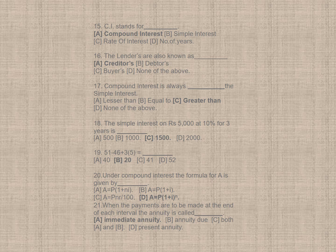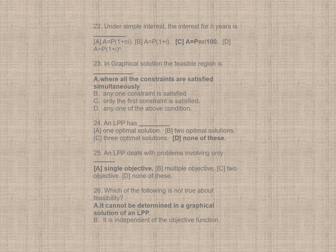Question 21. When the payments are to be made at the end of each interval, the annuity is called immediate annuity, correct option is A. Question 22. Under simple interest, the interest for N years is, the correct option is C, A is equal to P and R upon 1.